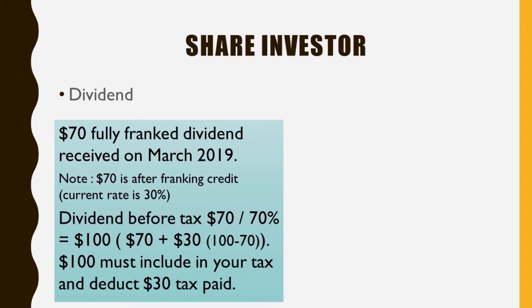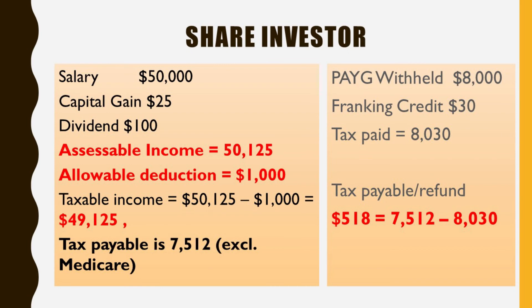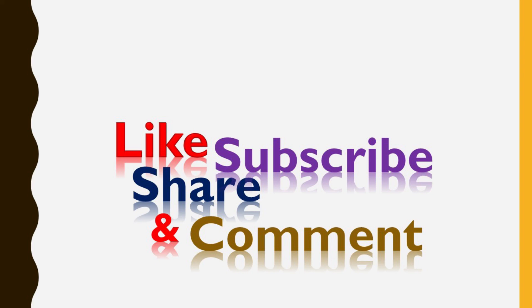Let me show you how to include dividend and capital gain in a tax return. In this example: salary is $50,000, capital gain is $25 from the previous example, and dividend is $100 from the previous example, giving total assessable income of $50,125. Assuming allowable deductions of $1,000, your taxable income is $49,125, which gives a tax amount of $7,512 excluding Medicare levy. However, you already paid $8,000 through PAYG withholding and have a $30 franking credit, so your tax refundable amount is $518.